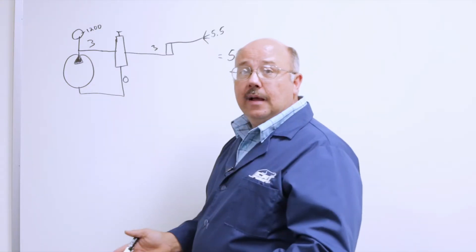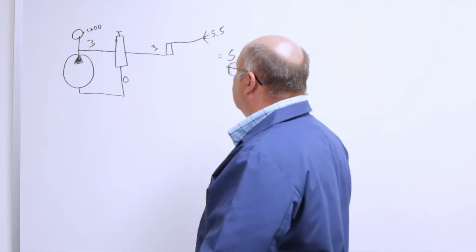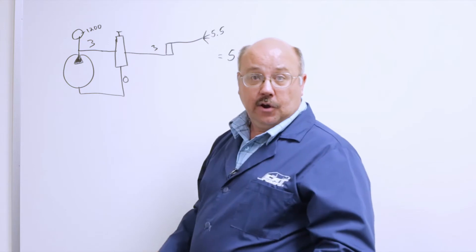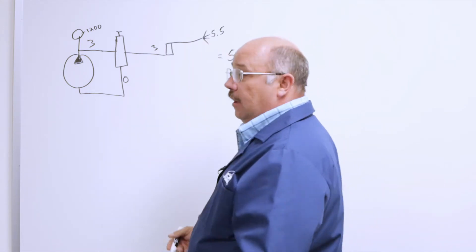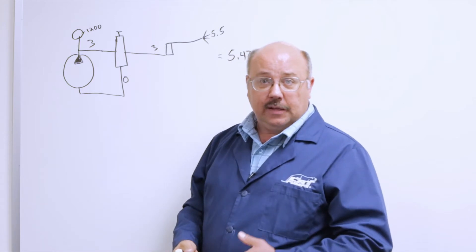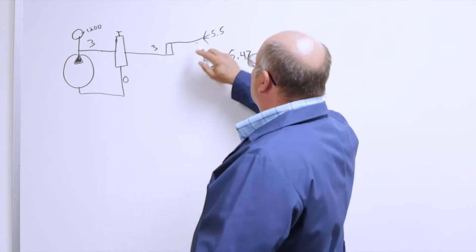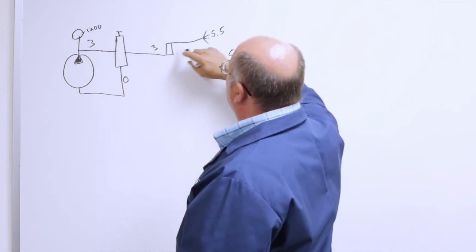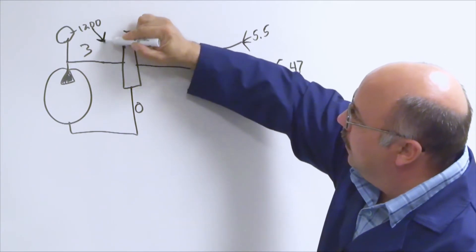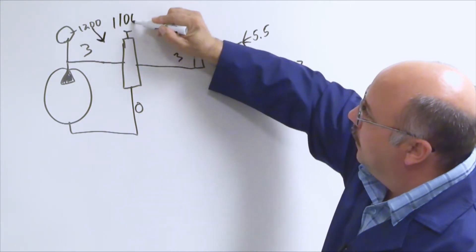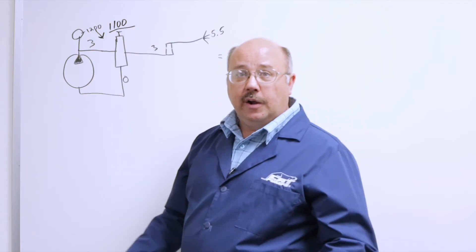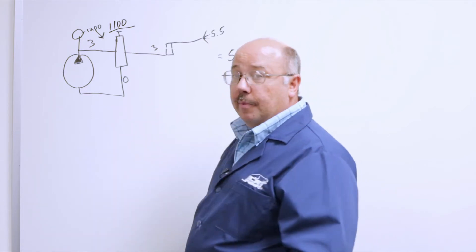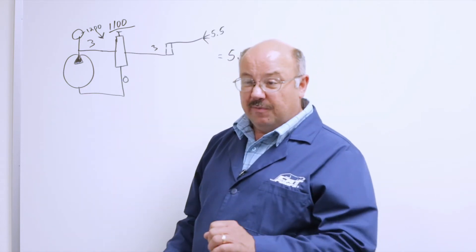As we shut the gun off, the three gallons will go to bypass. Then when we reopen the trigger gun we'll reinitiate our three gallons a minute out the tip at 1,200 psi. Now what happens over time, maybe a couple years or a few thousand hours, this nozzle is going to wear. When it wears, the hole gets larger, and the pressure will drop because we still have the same flow. So let's say this got larger and now the pressure is going to drop to maybe 1,100 psi. So we've lost pressure in the system not because the pump has worn out, not because the unloader's bad, but because the nozzle has worn, which is very hard to see.